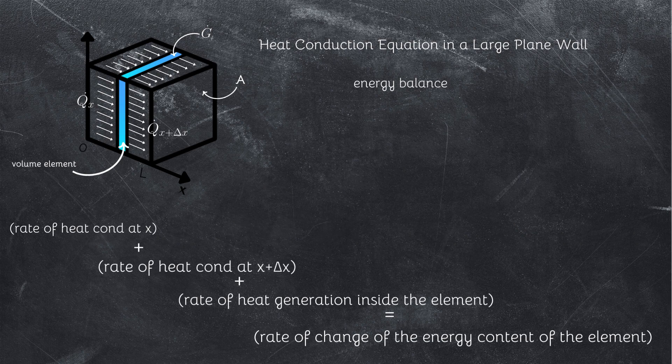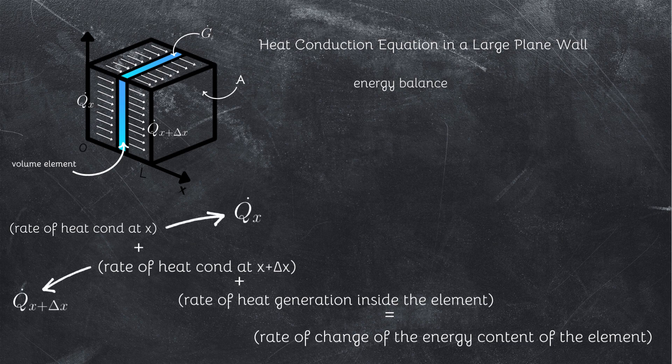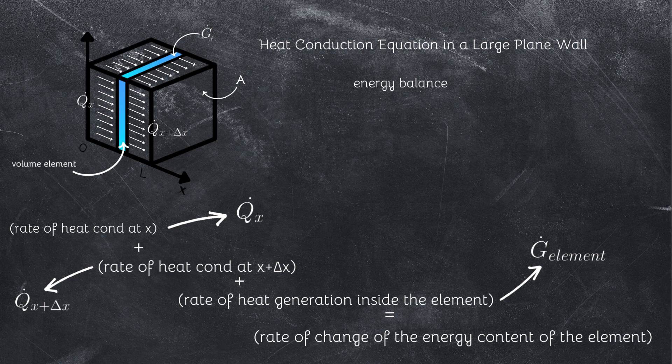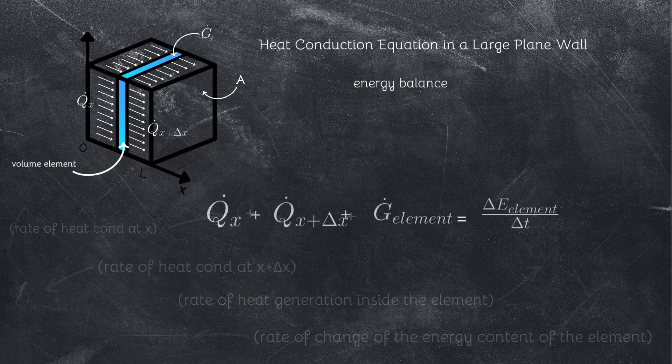We know that the rate of heat transfer at x and x plus delta x is q dot. The rate of heat generation is g dot, and the rate of change of the energy content of the element is the change in the energy of the element per unit time.